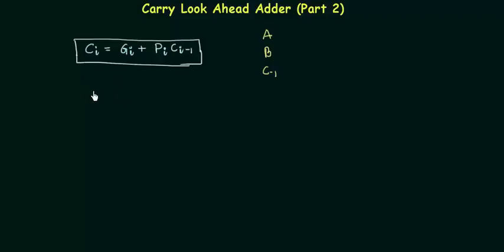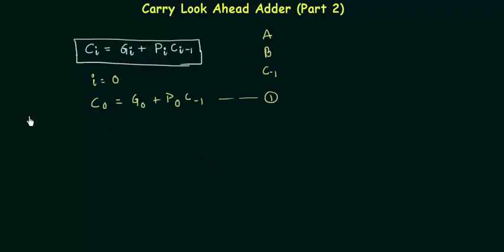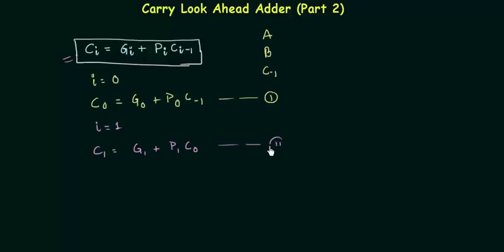Let's use this equation. If we put i equal to 0, we get c0 equal to g0 or p0 and c-1. Let's call this equation 1. Now putting i equal to 1, we get c1 equal to g1 or p1 times c0, because i is 1 so i minus 1 is 0. Let's call this equation 2.